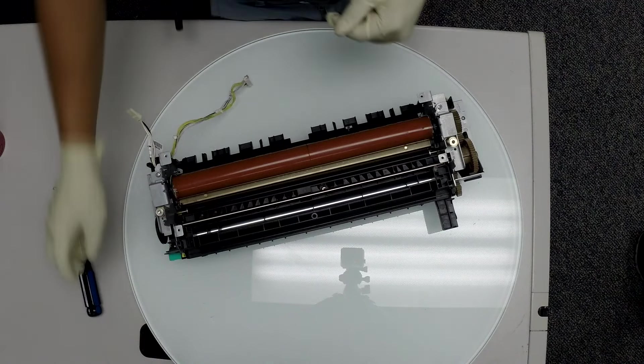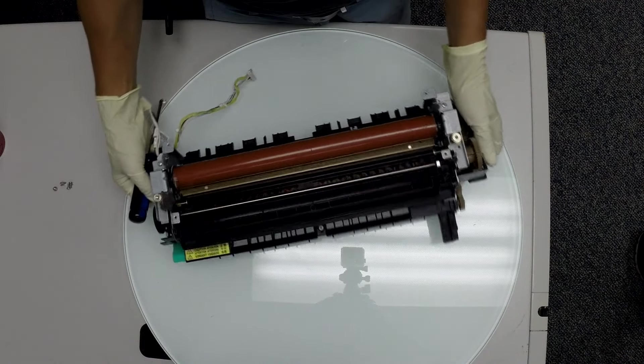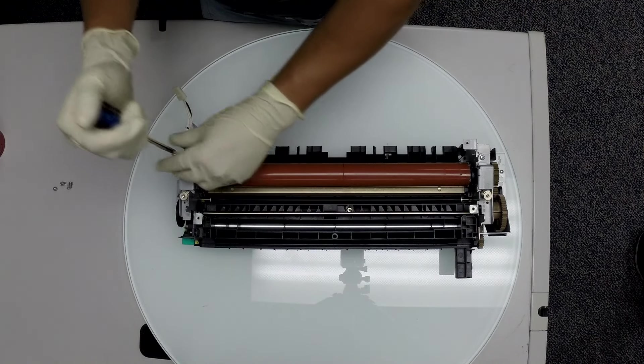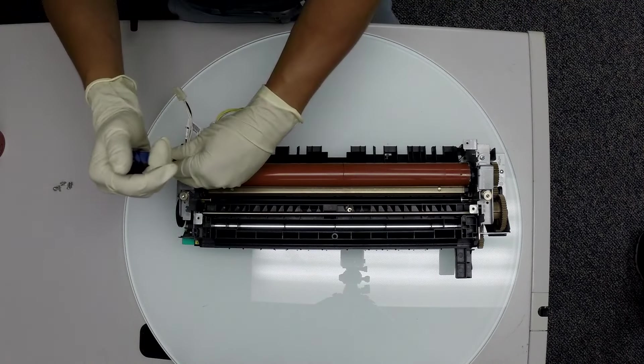Now we're going to remove the two metal pressure release brackets on the side that are holding the fixing film roller in place.